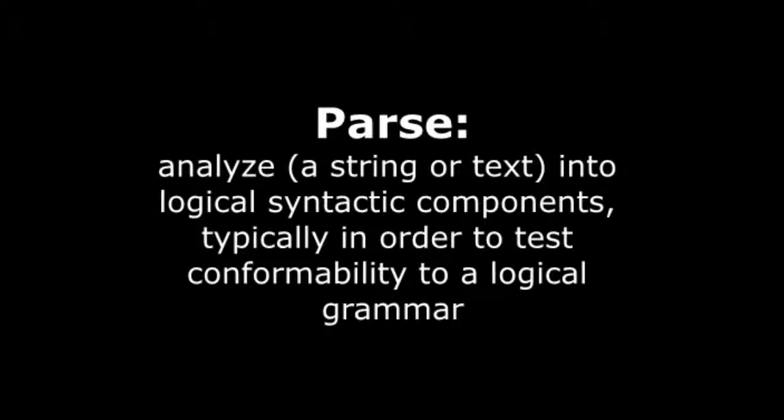Adventureland has a very primitive parser which uses a simple verb-noun structure. As with a lot of games of the day, sometimes the commands it expects are not as intuitive as we have come to expect nowadays. But for the era, the vocabulary list of about 120 words was pretty good, and often had many variants it would accept for any given command. For example, the parser accepts both 'get bottle' and 'take bottle.' The parser only looks at the first three letters of a word, though I will be using full words for ease of understanding.